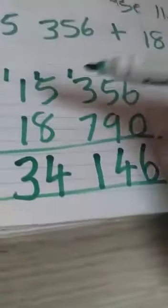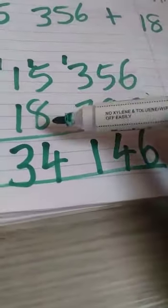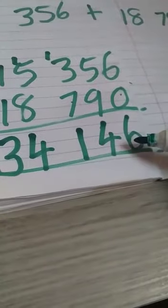One plus one is two. That's the one we carried over. It's three. That means 15,356 plus 18,719 will give us 34,146.